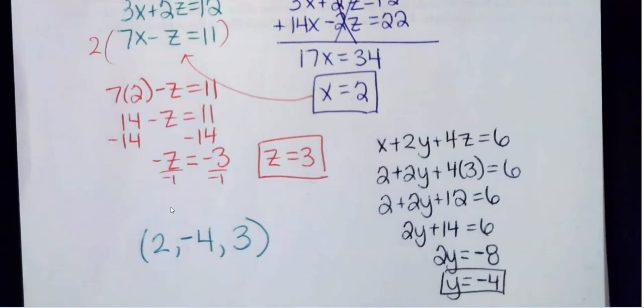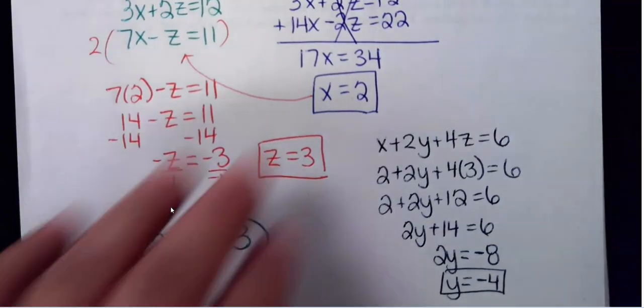If you want to write it as an ordered triple, write the x coordinate, then a comma, the y coordinate which is negative 4, another comma, then the z coordinate which is 3: the ordered triple is (2, negative 4, 3). As long as you find all three variables that's fine. Now I'm going to show you how to do substitution.